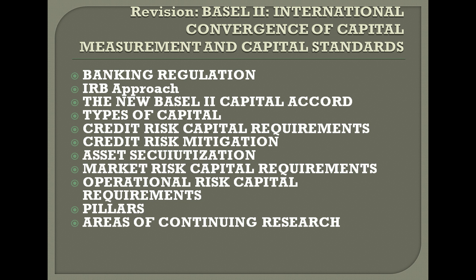The capital calculation is a function of loss given default, probability of default, and a maturity adjustment factor. The formula is: K = LGD × PD × f(m, b), where f(m, b) is the maturity adjustment function. Loss given default and probability of default are important inputs; the probability of default has a specific shape, with systematic risk factors and a complex derivation based on worst-case systematic draws. The maturity adjustment is also applied.